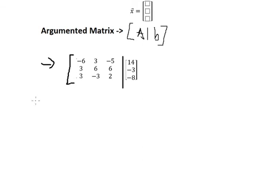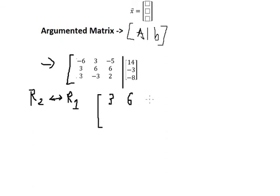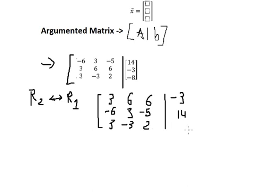I will transform this matrix using row operation rule number two to swap row number one. So now we have: three, six, six, negative three; and negative six, three, negative five.